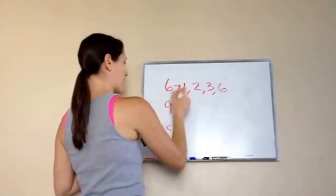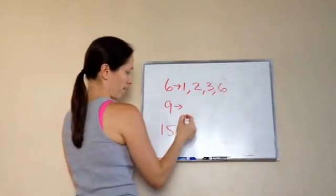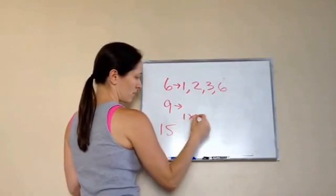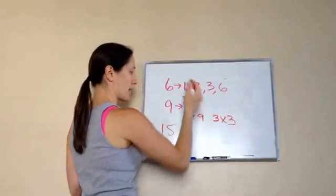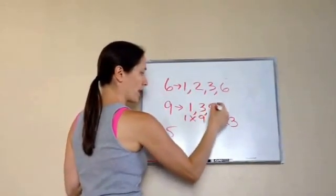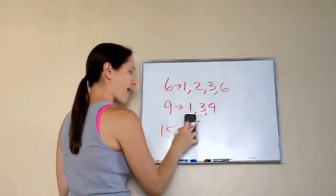Alright, now let's do factors of 9. Factors of 1 times 9, and 3 times 3. Okay, let's write that out there. 1, 3, and 9.